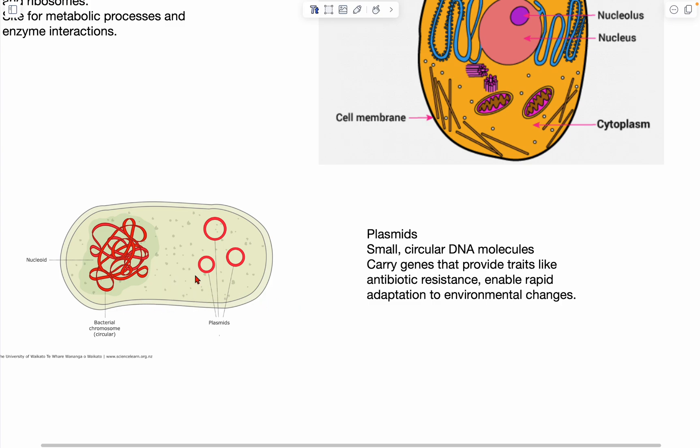So, just think of them as different in terms of reproduction. And this basically just allows for quick adaptation to changes in pressure. So, they can also be transferred between bacteria through conjugation, which contributes to the rapid spread of resistance traits among bacterial populations.